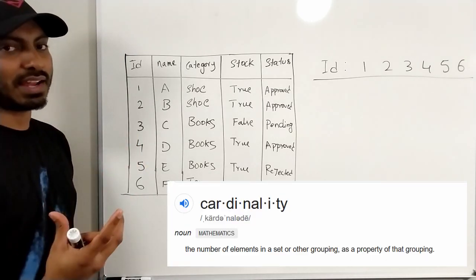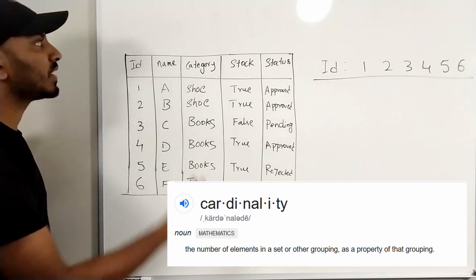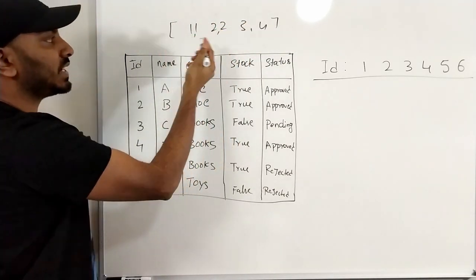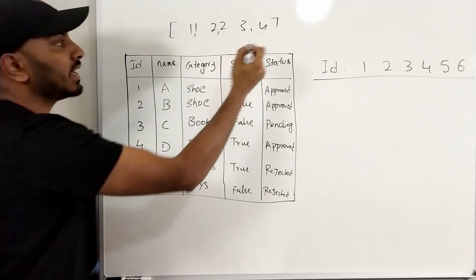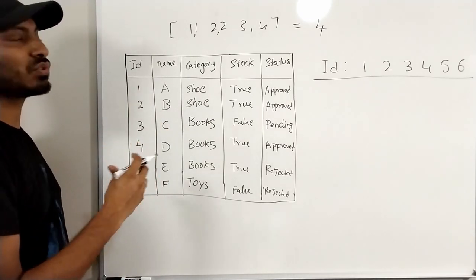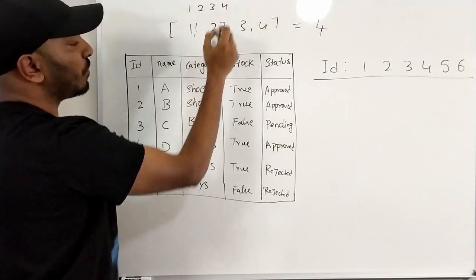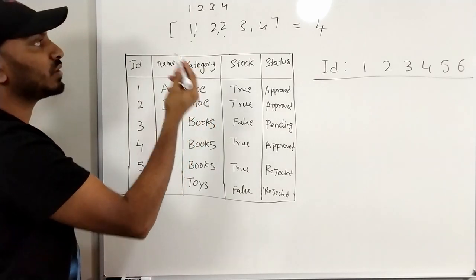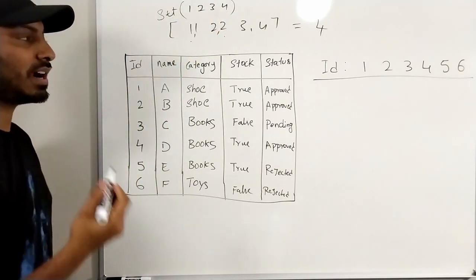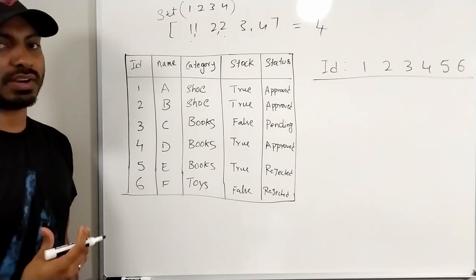There is a concept called cardinality. Cardinality tells you how unique the data is. For example, given the array [1, 1, 2, 2, 3, 4], the cardinality is 4 because that's the total number of unique elements. We basically take the set of the whole data — unique items are 1, 2, 3, and 4 — and count of that set is the cardinality. Understanding cardinality helps us decide what kind of indexing to use.